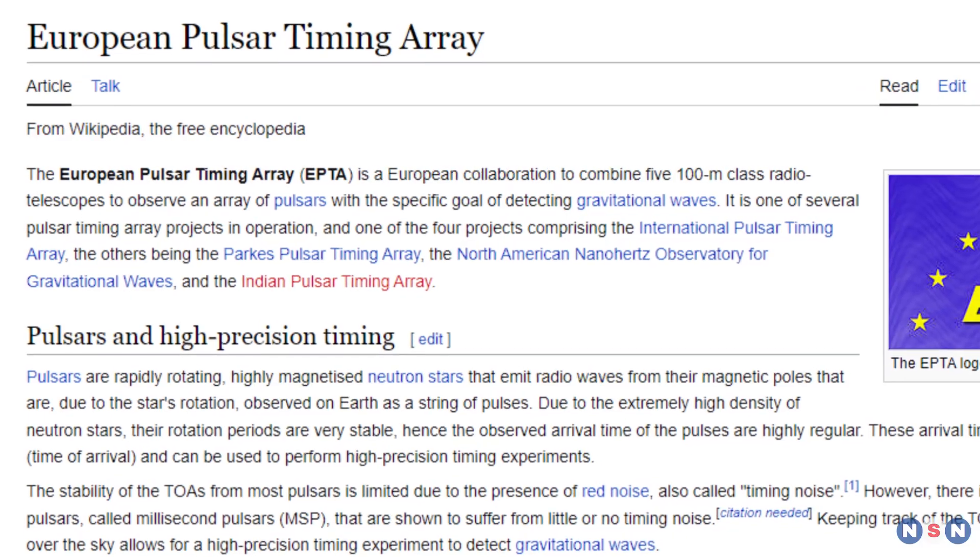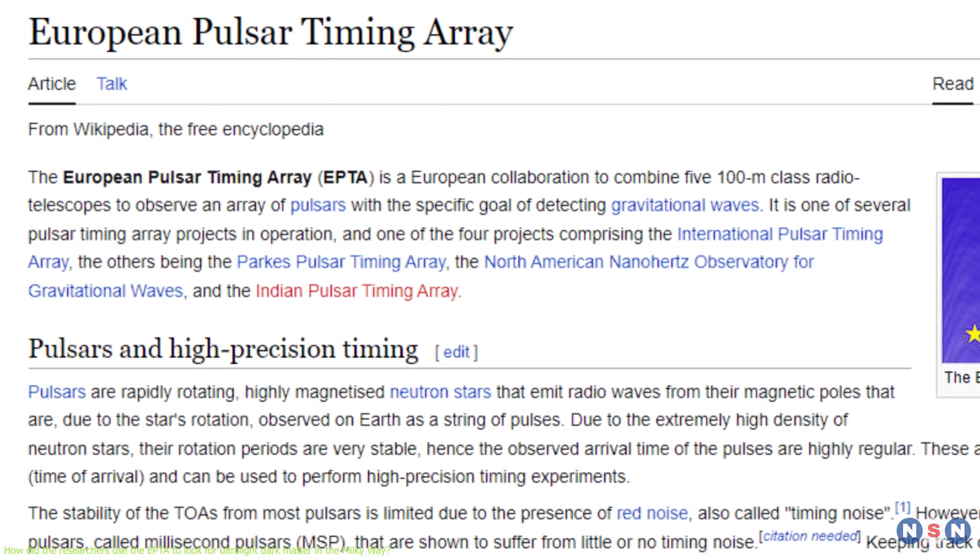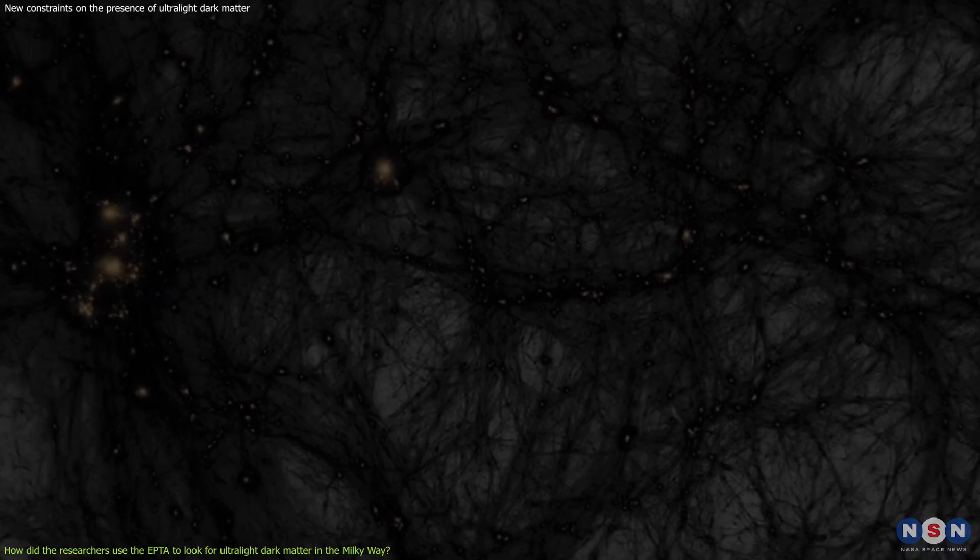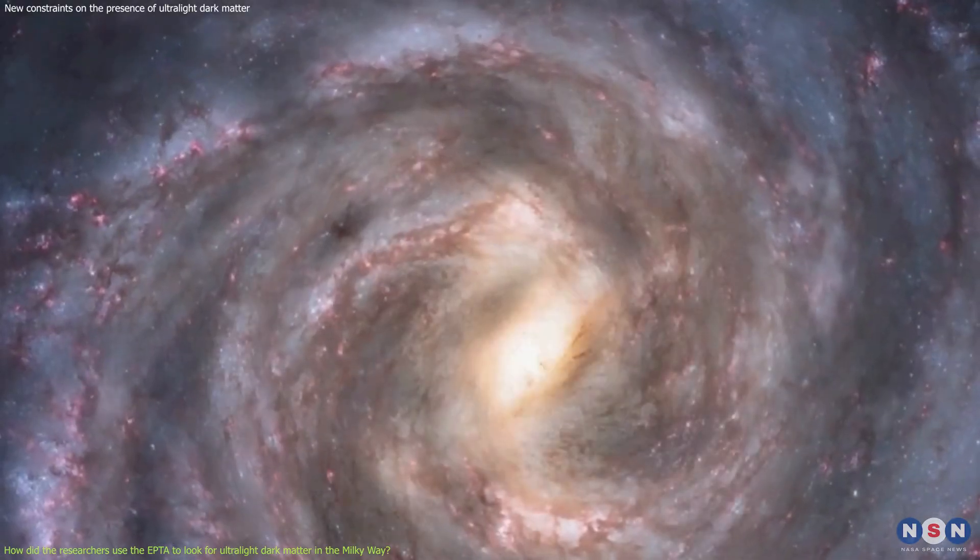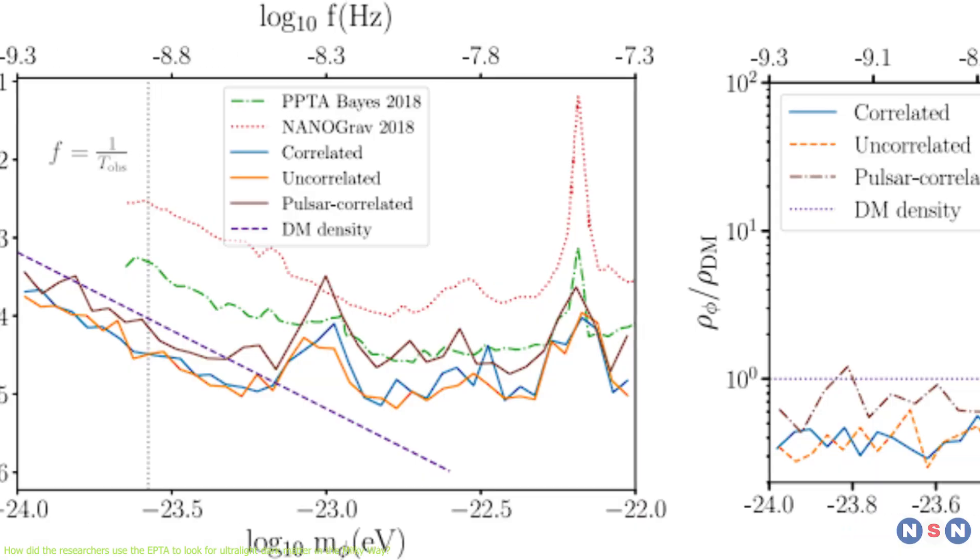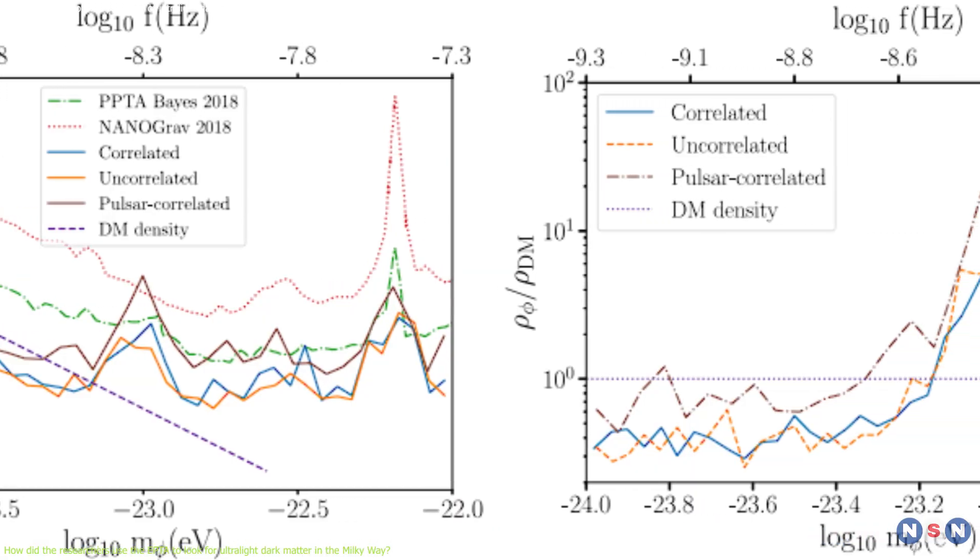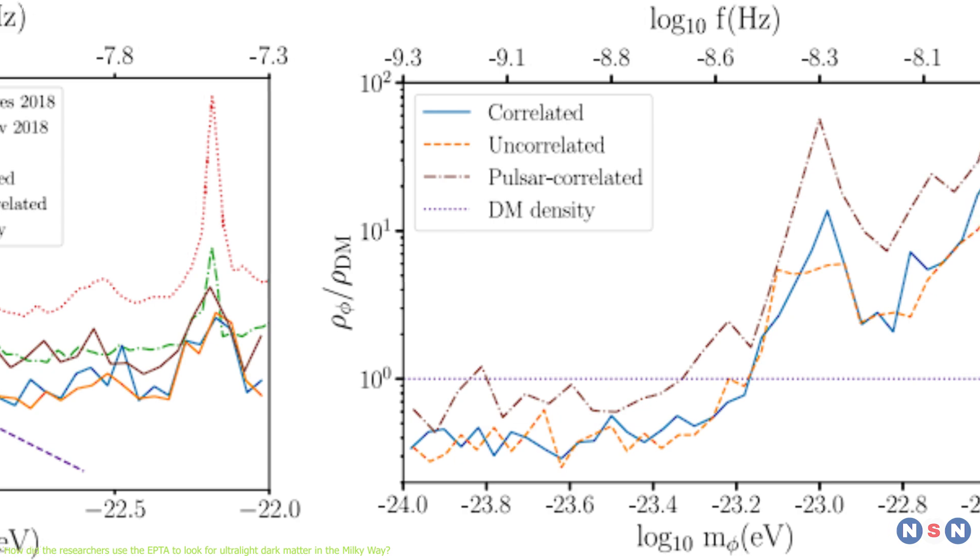So, what is the European Pulsar Timing Array, or EPTA for short, and how was it used to look for ultralight dark matter in the Milky Way galaxy? What methods and results did the researchers obtain, and how did they compare them with other models and experiments?